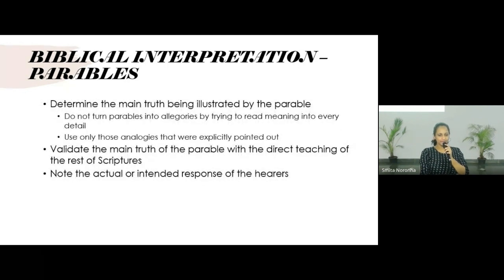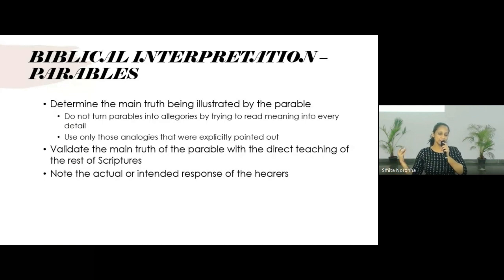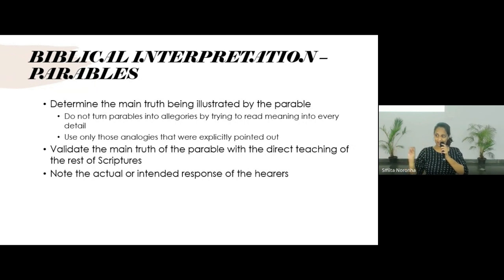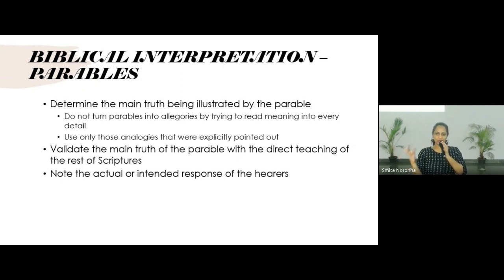We determine what was the main truth being illustrated by the parable. First we look at the natural meaning, then we look at what was being said. So if it says 'the kingdom of God is like a tree,' what about the tree is like the kingdom of God? Jesus is clearly pointing out what he wants to compare. So we don't start comparing all the details of the parable — we only compare what has been clearly stated and find the spiritual meaning Jesus was trying to explain.